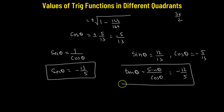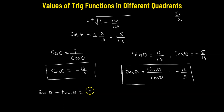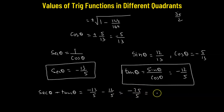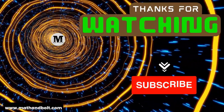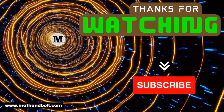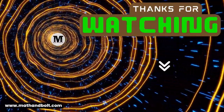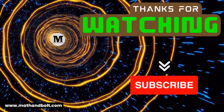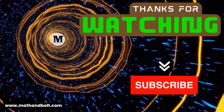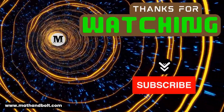We have now obtained both secant theta and tangent theta. Finally, secant theta plus tangent theta equals negative 13 over 5 plus negative 12 over 5, which gives us negative 25 over 5. So our final value is negative 5. Thank you.